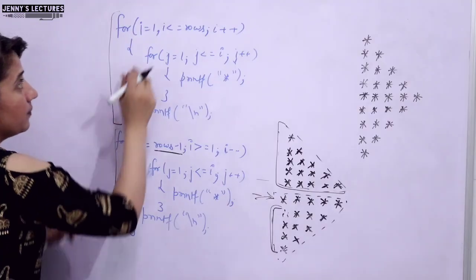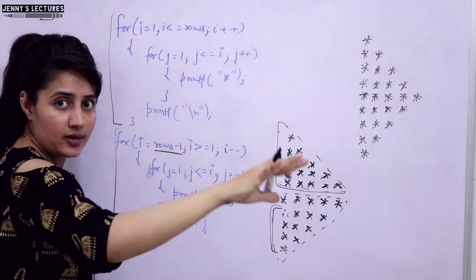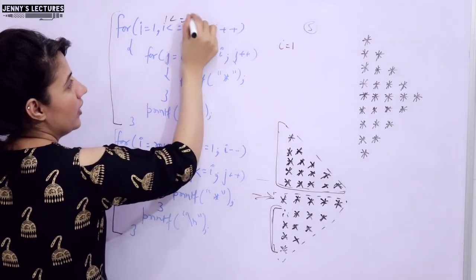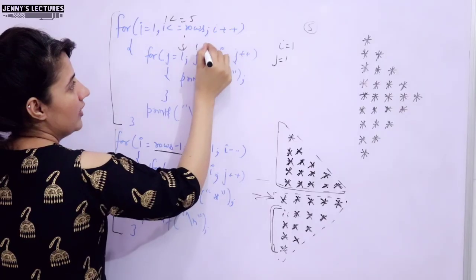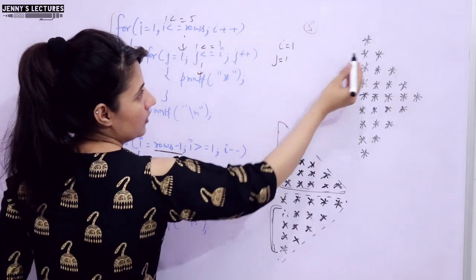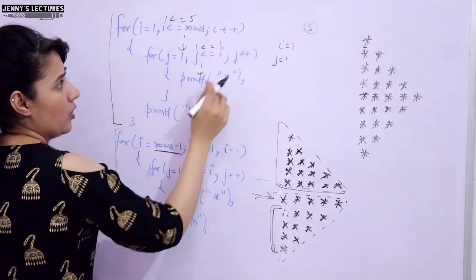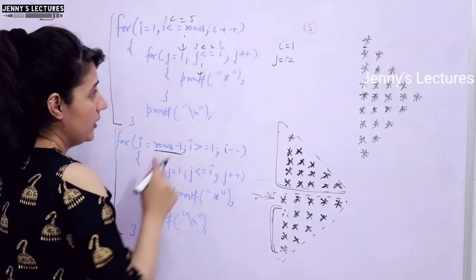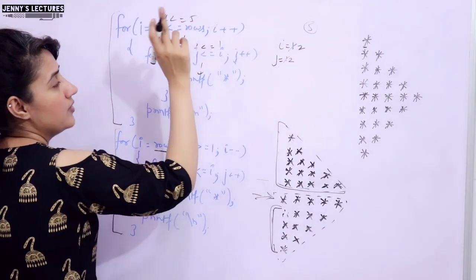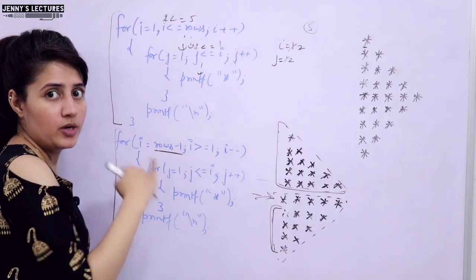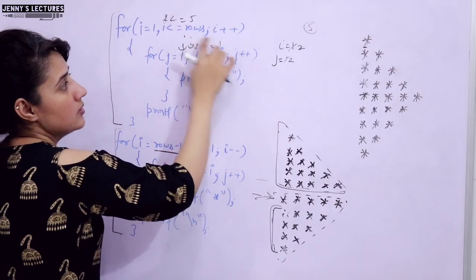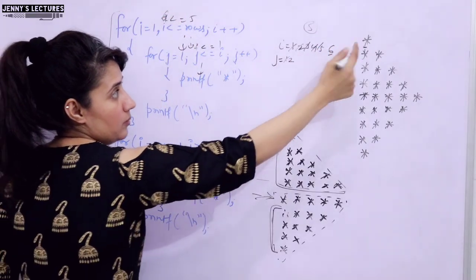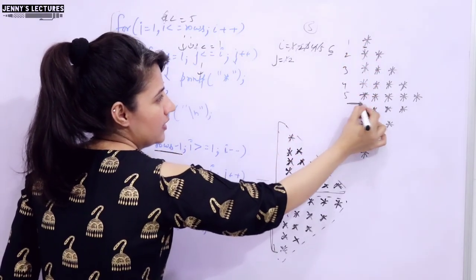Let me dry run this. Number of rows is 5. i is initialized to 1; 1 less than or equal to 5 — condition true. j is initialized to 1; j less than or equal to i which is 1 — true, so one star is printed. j becomes 2; 2 less than or equal to 1 — false, exit inner loop, print newline. i increments to 2, then 3, 4, 5. When i becomes 6, the condition is false and we exit. So 5 lines are printed for the half pyramid.